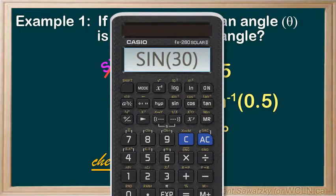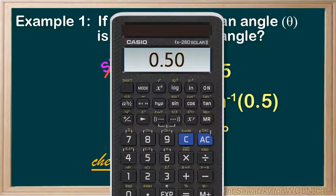Sine, and in this case we put in 30, and we get 0.5. So, excellent. We've shown that our statement is true.